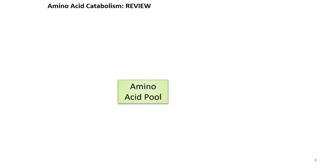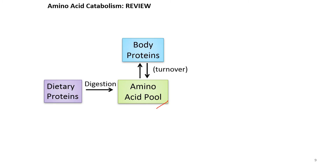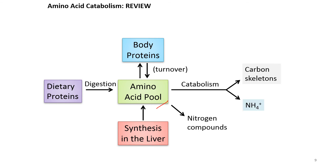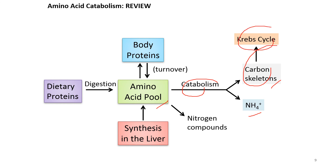To summarize: the amino acid pool in a healthy person is about 100 grams, sourced from diet, body protein turnover, or biosynthesis of non-essential amino acids. Amino acids are used to make nitrogen compounds such as proteins, neurotransmitters, and nucleic acids. During starvation, amino acids are catabolized into two components — the carbon skeleton and ammonium ions. The carbon skeleton feeds into the TCA cycle for energy, while the ammonium ions are converted into urea via the urea cycle.